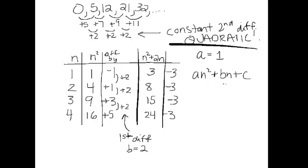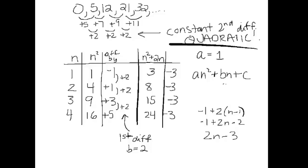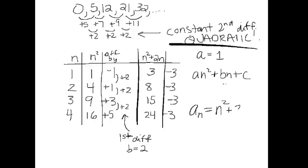Notice that in that third column, we could actually have figured out that C, the constant value, was negative 3. I'm going to write the arithmetic explicit formula using that column. The first number there is negative 1 — that's where we're starting. We add 2 to that number to get all the other values. Using the arithmetic explicit formula: starting at negative 1, with common difference 2, gives us negative 1 plus 2 times (n minus 1), which simplifies to negative 1 plus 2n minus 2, or 2n minus 3. So the formula is A sub n equals n squared plus 2n minus 3.